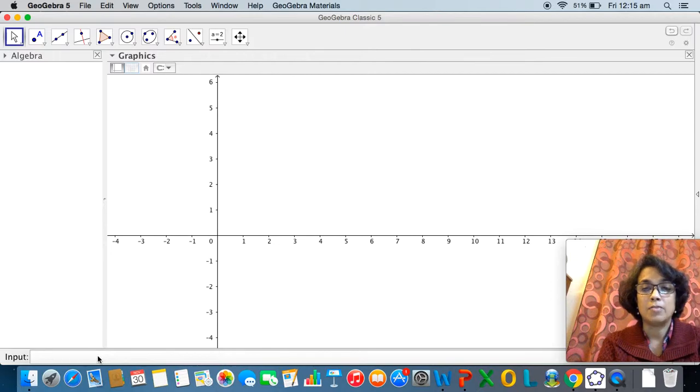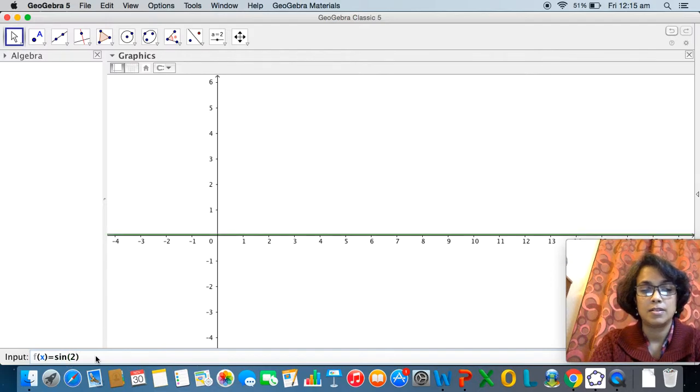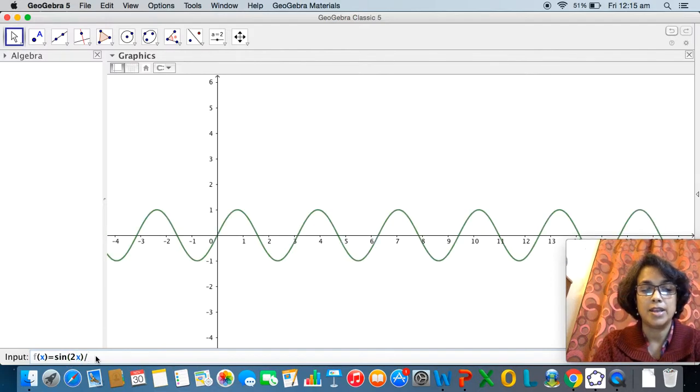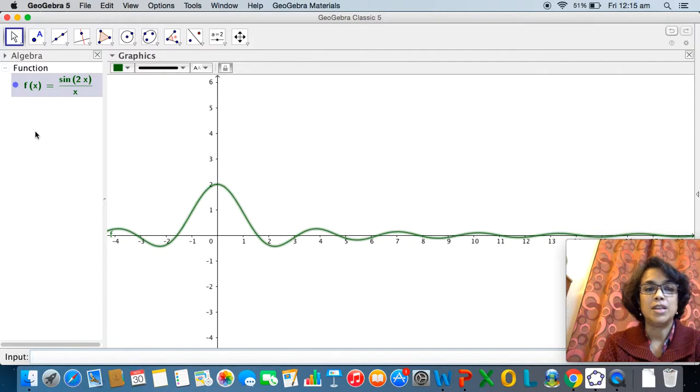Look at the input bar at the bottom of the screen. I can enter a function here, so suppose I enter a function f of x is equal to sine 2x divided by x. After entering it in the input bar I have to press enter so that it shows on the algebra view.